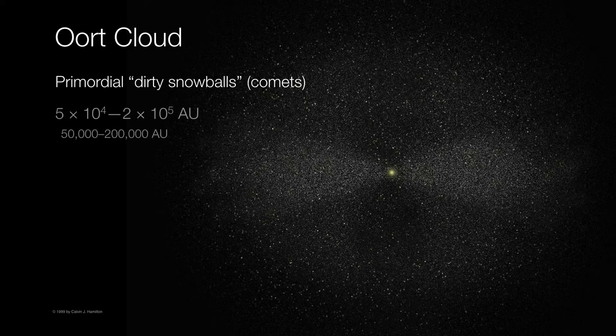But some estimates put the radius of the Oort cloud at anywhere from 50,000 to 200,000 astronomical units — that is, the distance from the Sun to the outer edge of this sphere.